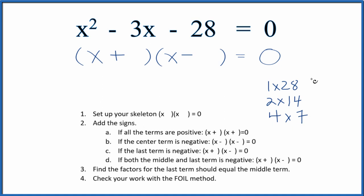So these are the factors of 28. And I can see really the only one that has that difference of 3 is 4 times 7. So I'm going to put a 7 here, since that's the bigger number and I want this to be negative, and a 4 here.